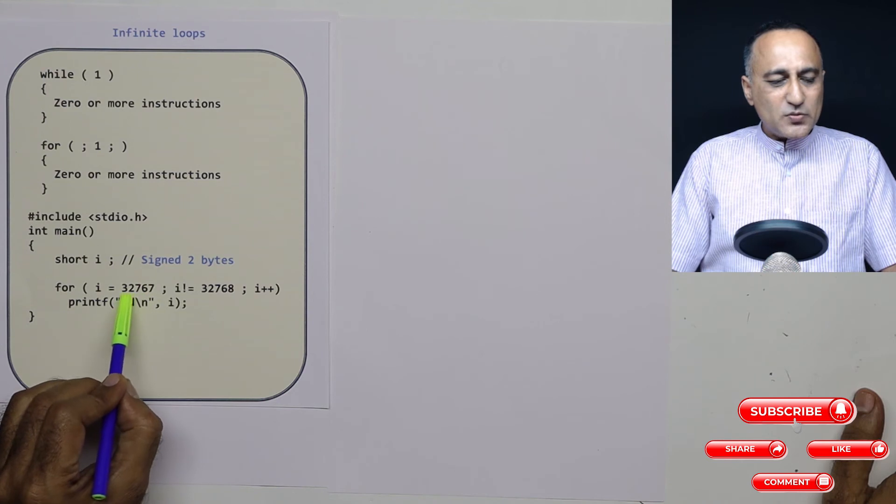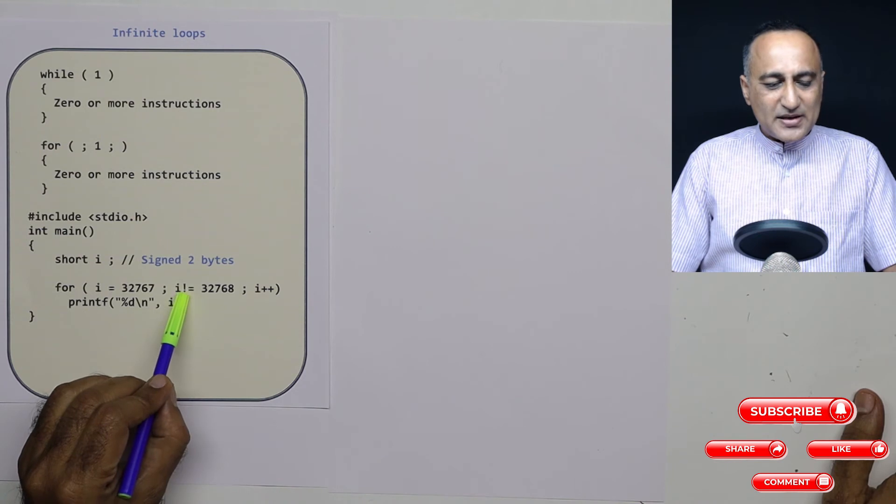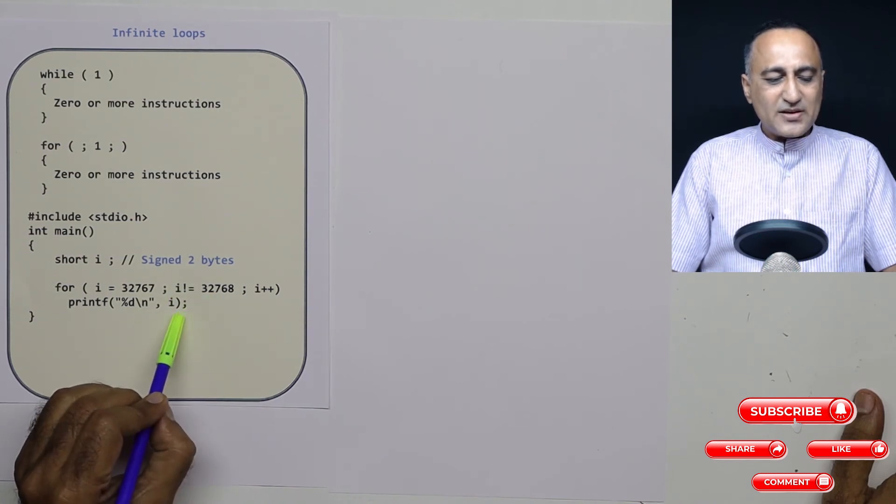So once this is 32,767 it will compare. Once it compares it finds that this is not equal to, so it will print 32,767.